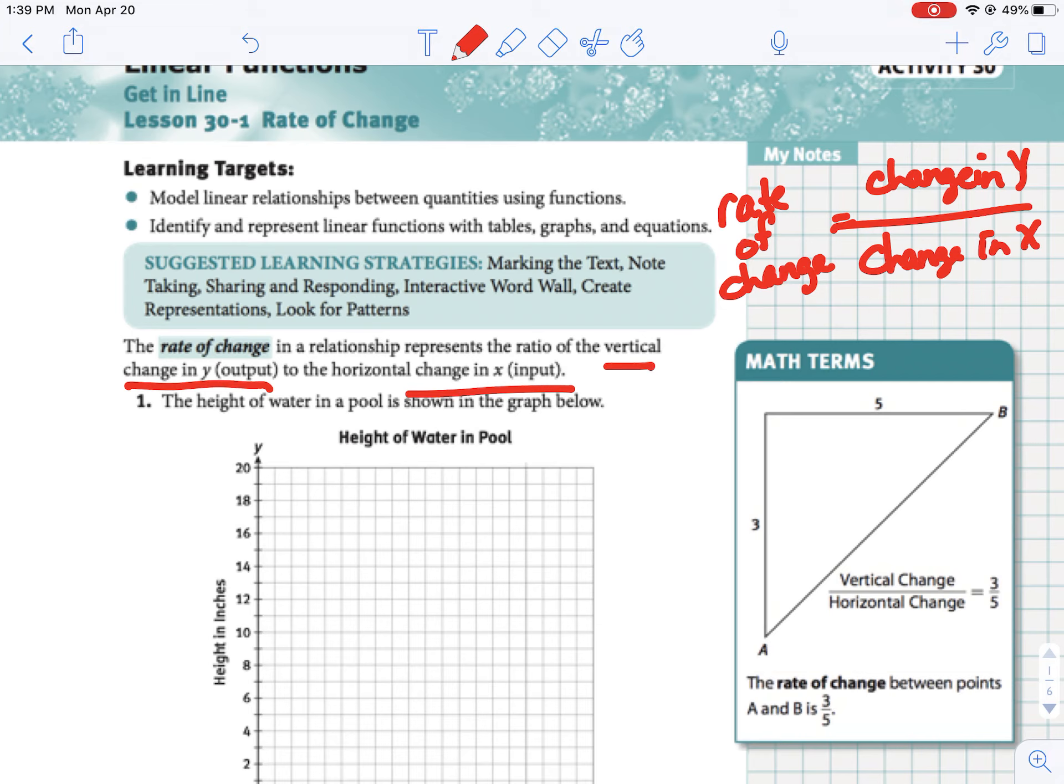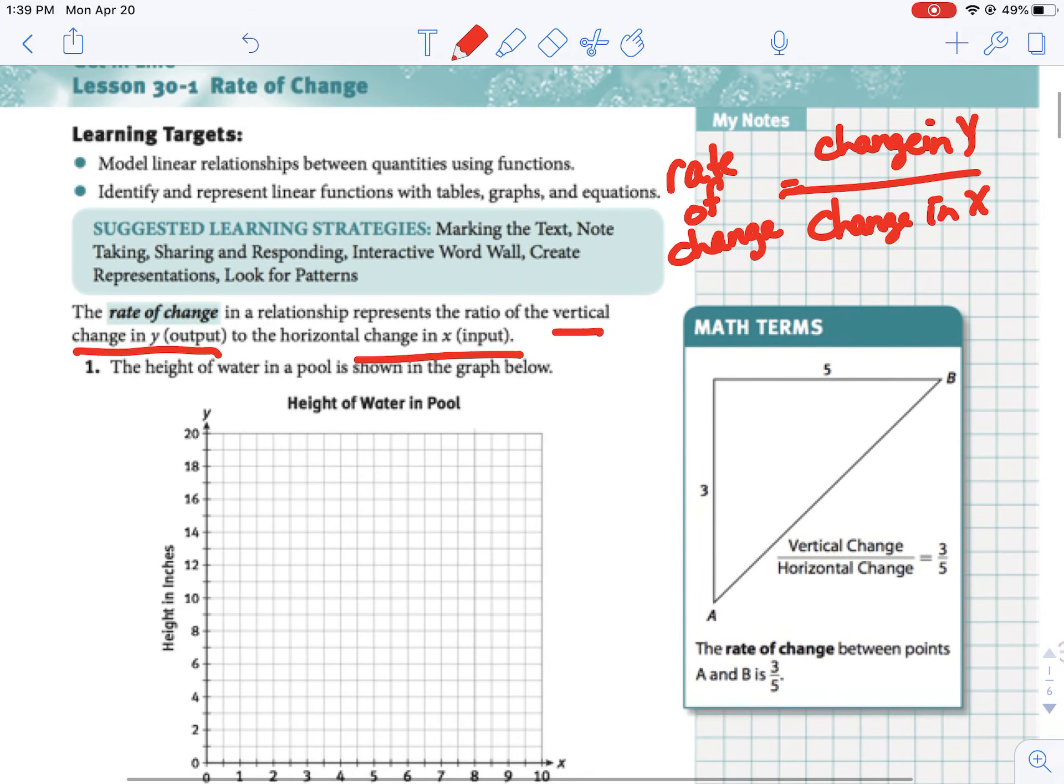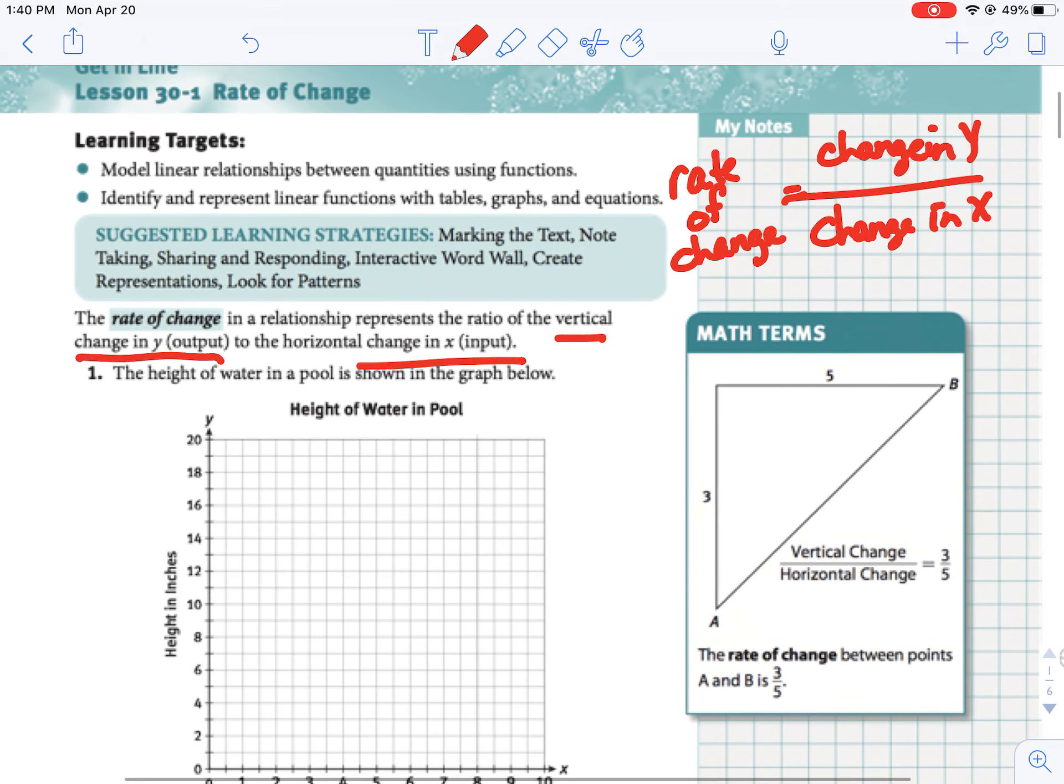So change in Y over change in X is what rate of change is. Today we're going to do some modeling in terms of lines. Taking a look at the math terms in the corner, to go from point A to point B, we would go up 3. So that vertical change or the change in Y is 3, and I would go right positive 5. So our horizontal change is 5. Therefore your rate of change is 3 fifths.